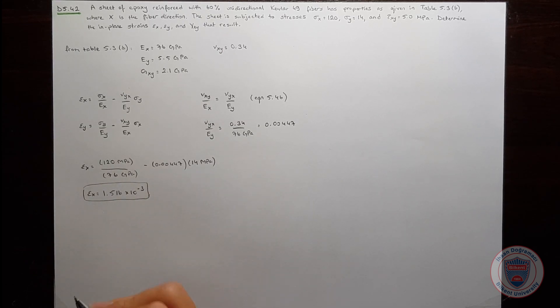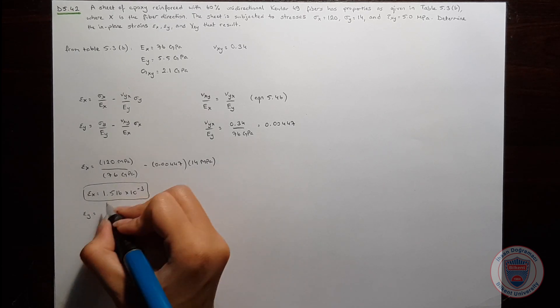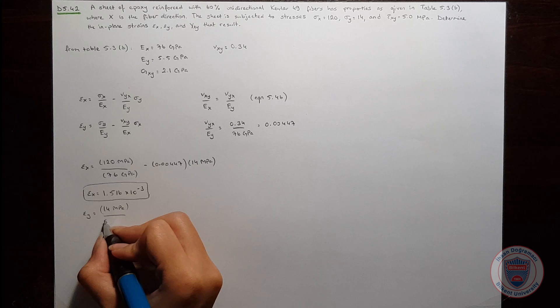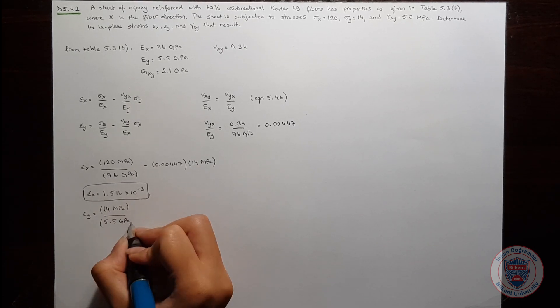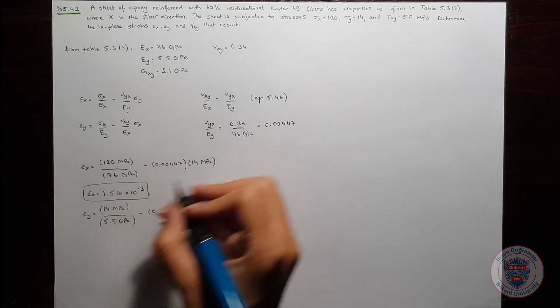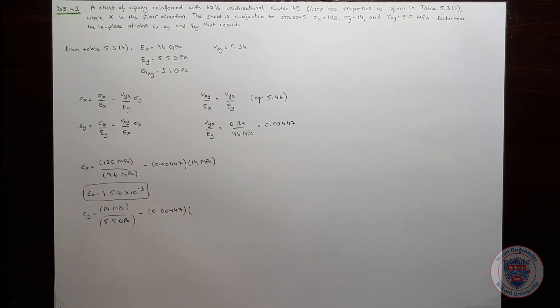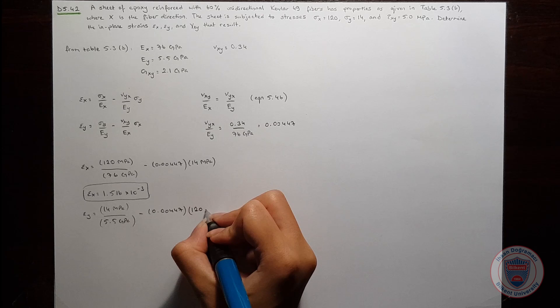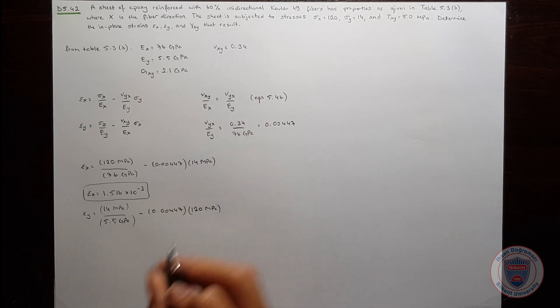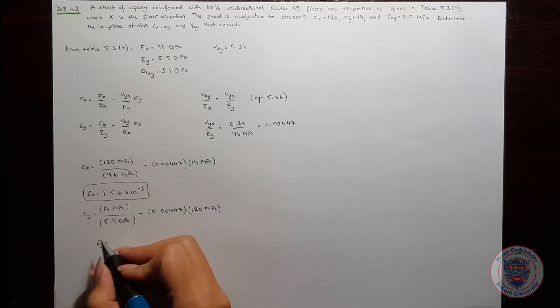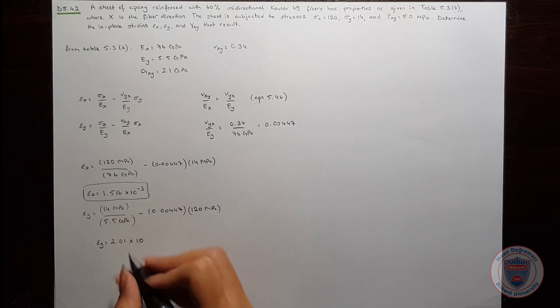Let's calculate epsilon Y. It is equal to 14 MPa over 5.5 GPa minus the ratio 0.00447 times sigma X, which is 120 MPa. From this equation we obtain epsilon Y equal to 2.011 times 10 to the power of minus 3.